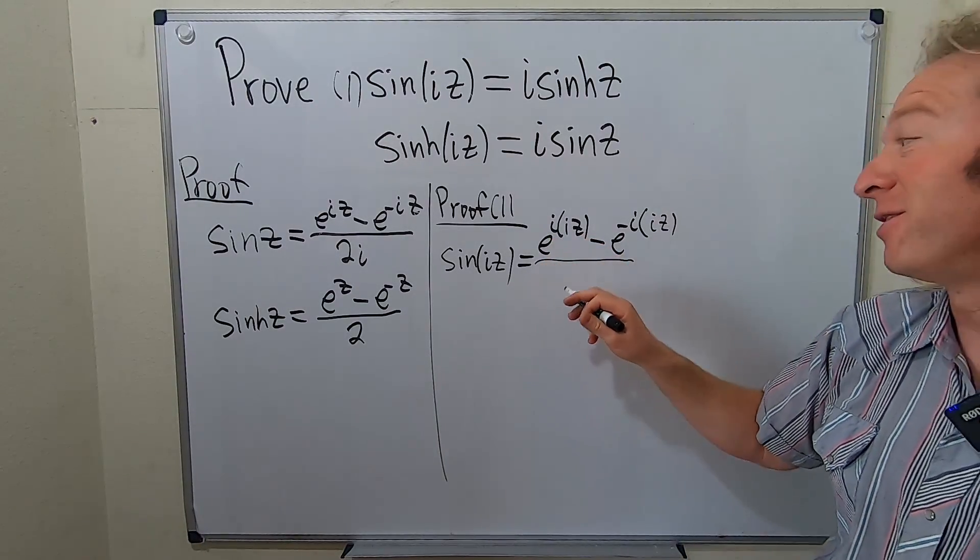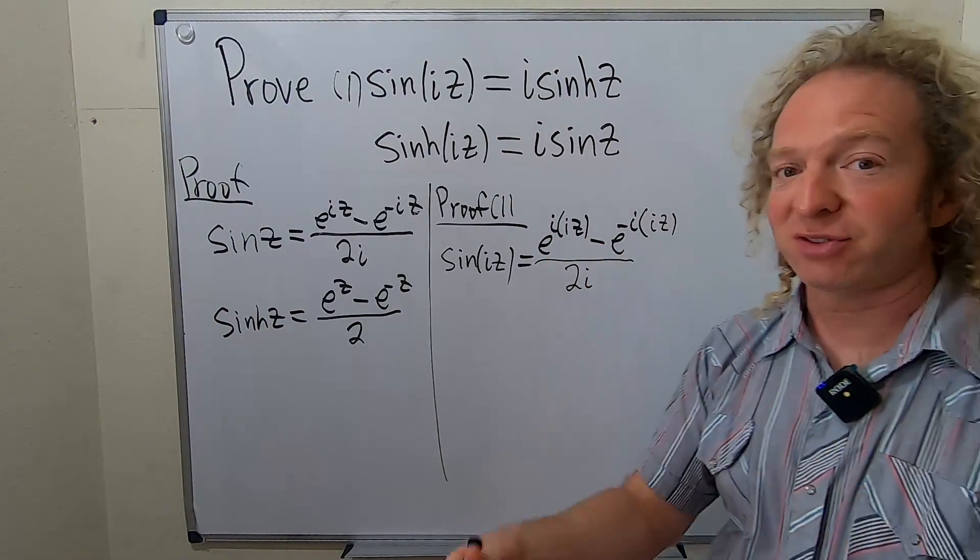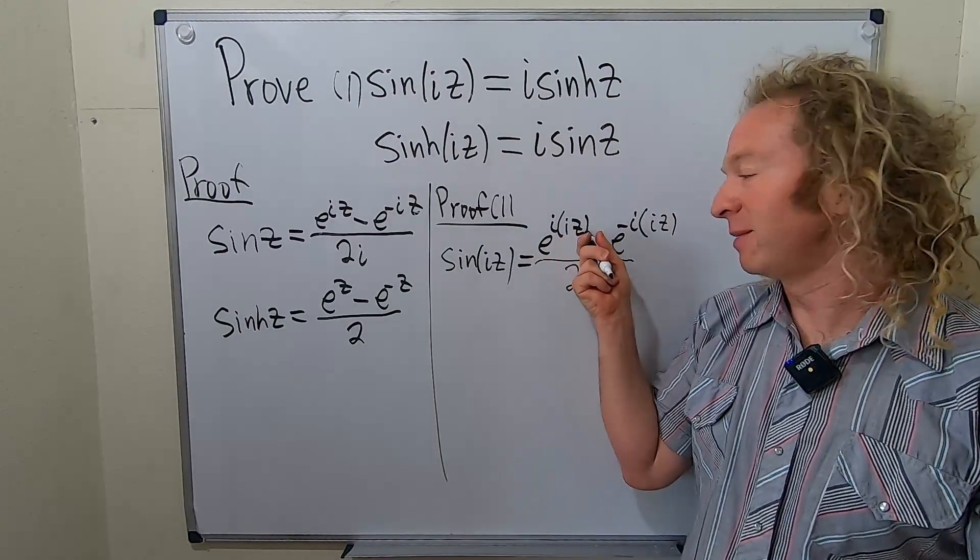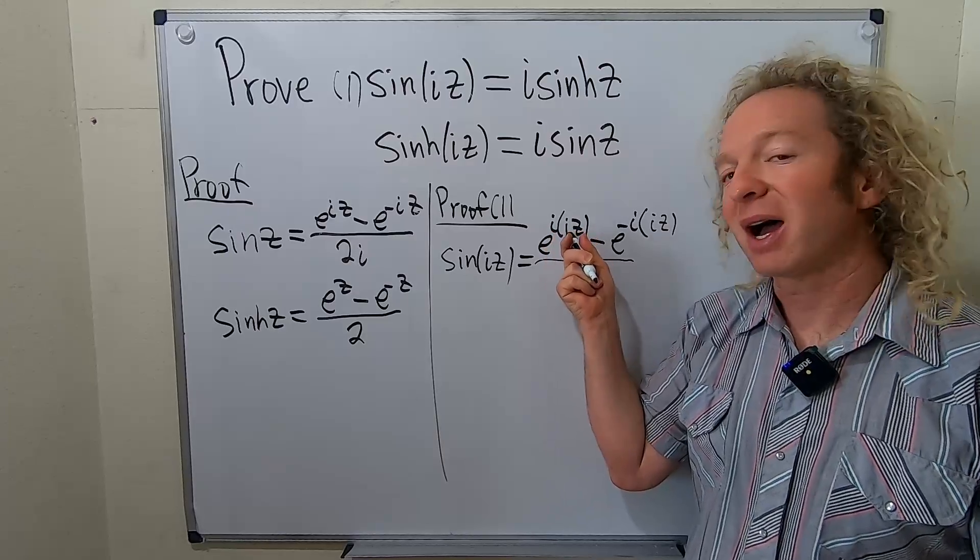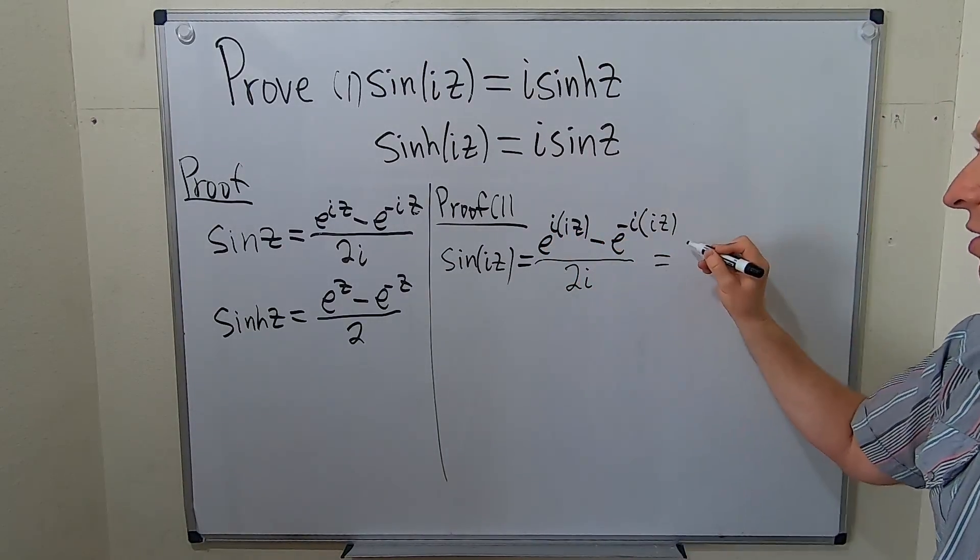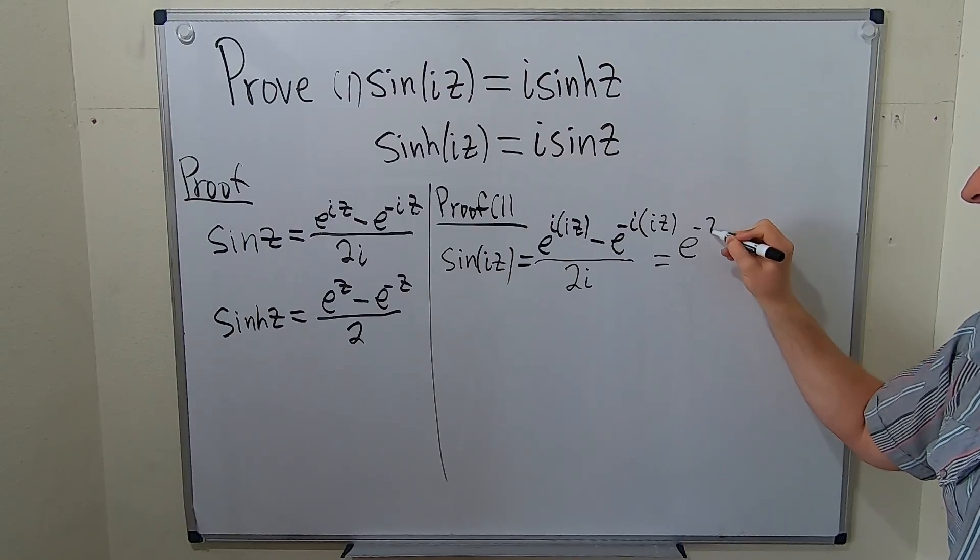So let's try it. This is going to be, this is kind of fun because I haven't done this. So if it works, it's great. So e to the i times iz. So that's i times i. So i squared is negative 1. So I'm going to skip this up here. i squared is negative 1. So this is e to the negative z minus.